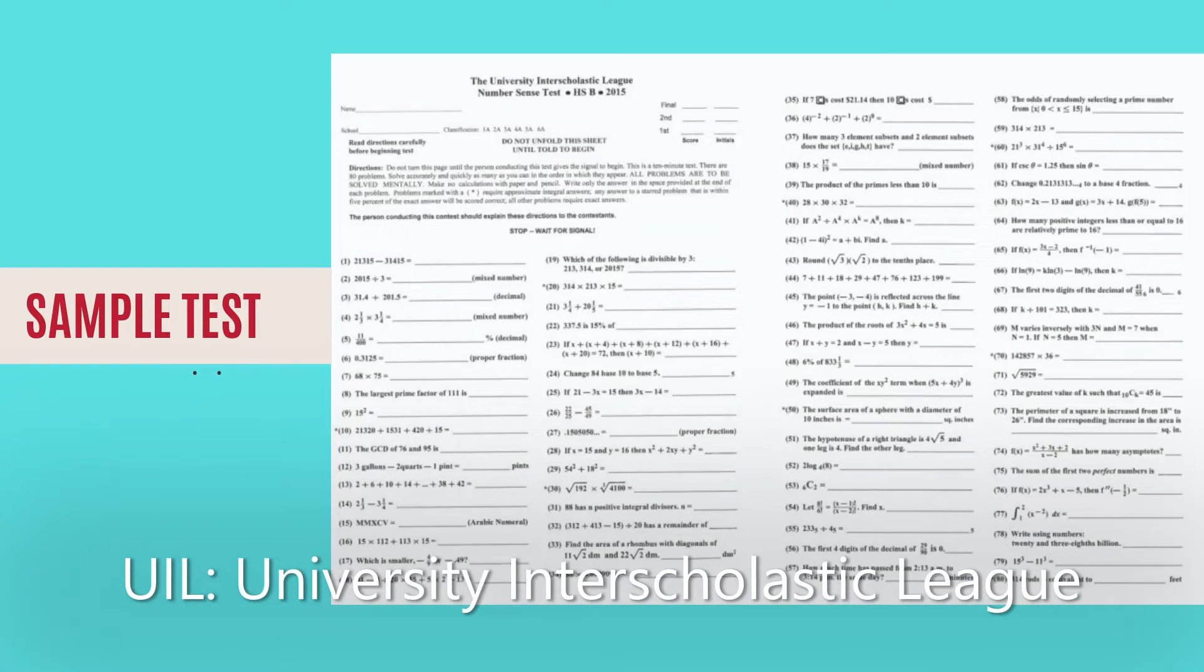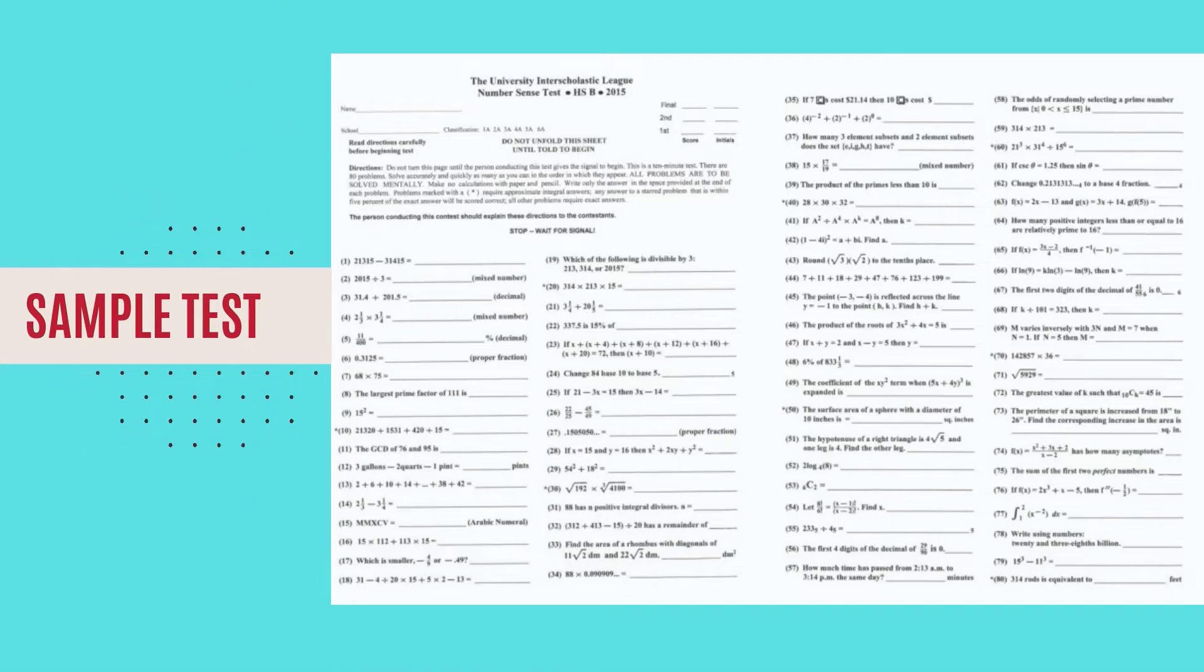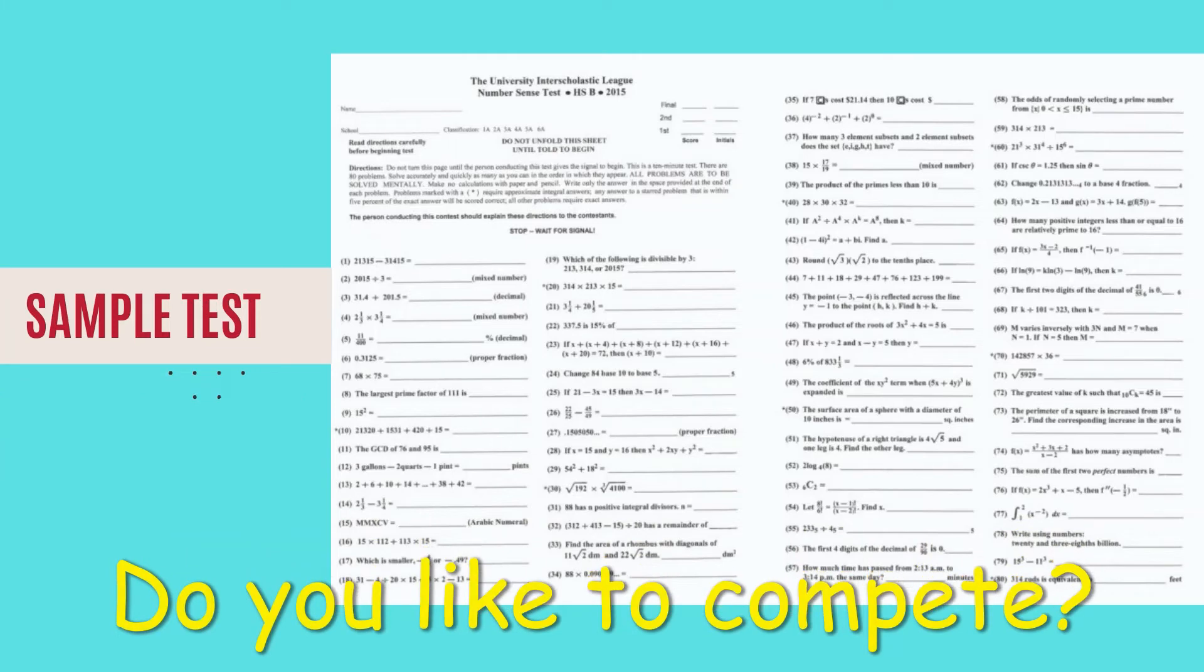The letters UIL stands for University Interscholastic League, and this is a competition that runs from fourth grade to high school. We train students with different skills, and NumberSense is just one of those skills. There is a particular time in the year where all of those students who are trained will be competing with each other on the skills that you were taught.